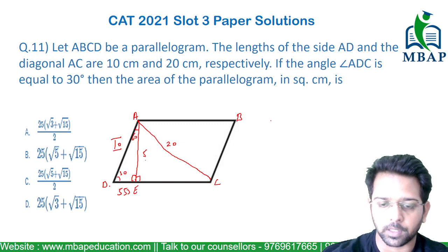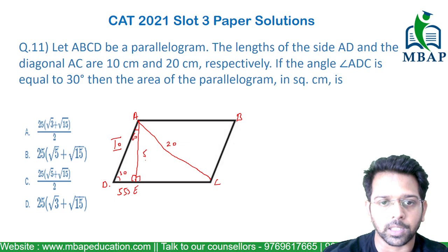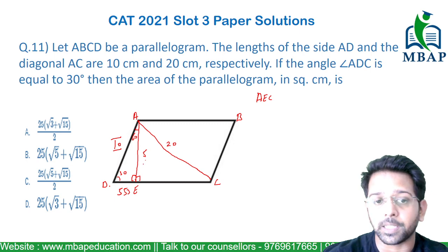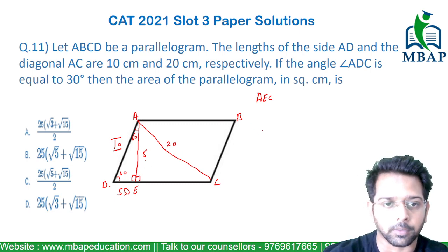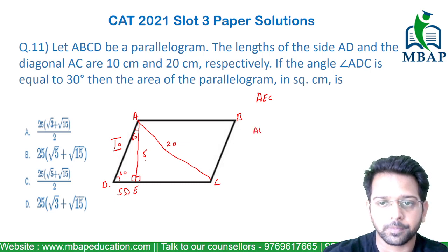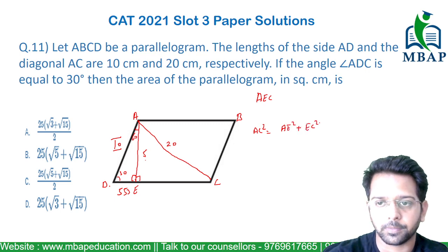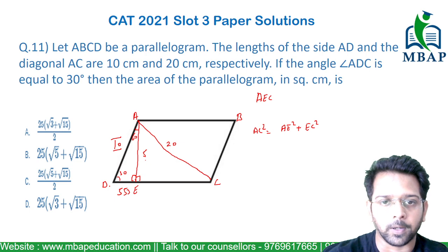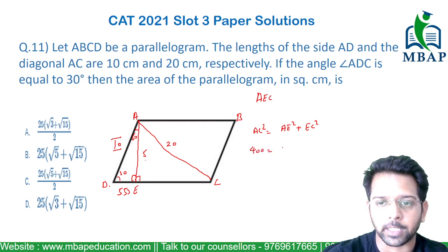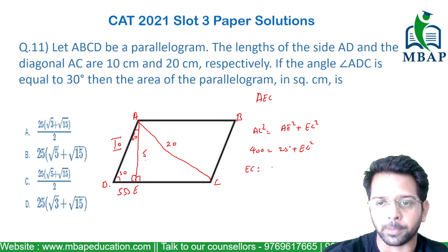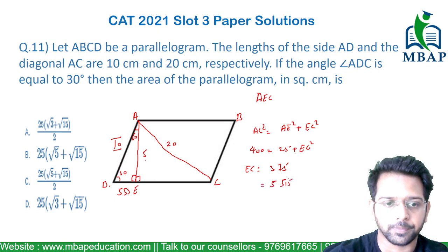Now let's look at triangle AEC. This is a right-angle triangle. Using Pythagoras: AC² = AE² + EC². We know AC is 20 and AE is 5, so: 20² = 5² + EC², which gives 400 = 25 + EC², so EC² = 375, and EC comes out to be 5√15.